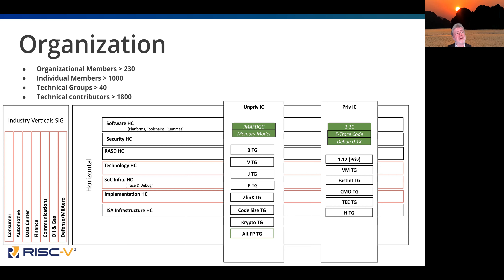The implementation committee makes sure that things defined in the specifications are actually implementable and implementable reasonably. The ISA infrastructure committee handles architectural tests, formal models, continuous integration, and documentation. We also have industry verticals groups — think of them as inbound product management, working to get data from industries about whether we have everything needed to succeed. Things with red boxes are pending and just getting off the ground; things with black boxes are well established. Feel free to contact us at help@riscv.org for more information.